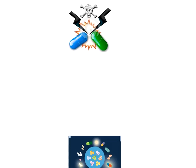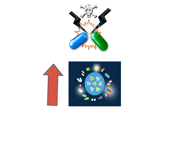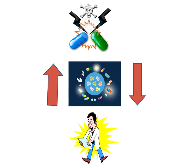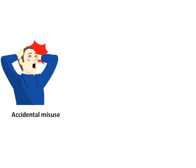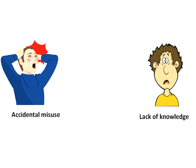A drug interaction is a situation in which a substance affects the activity of a drug — that is, the effects are increased or decreased, or they produce a new effect that neither produces on its own. These interactions may occur out of accidental misuse or due to lack of knowledge about the active ingredients in the relevant substances.